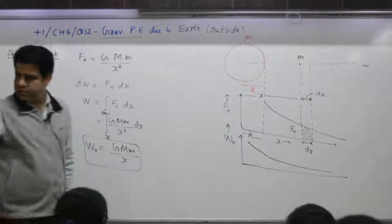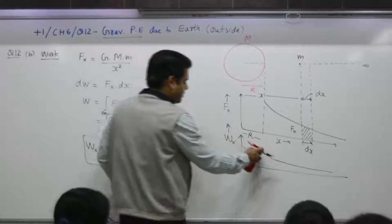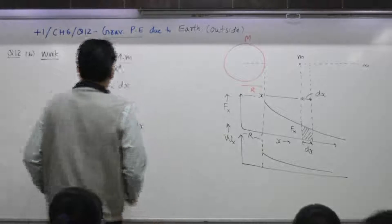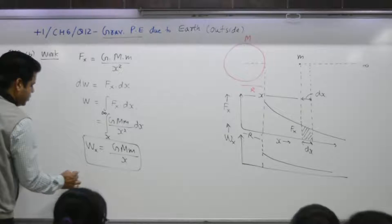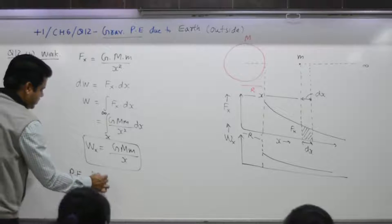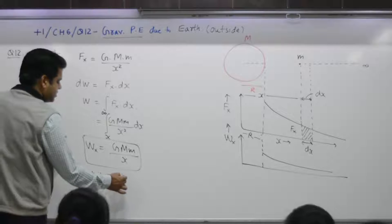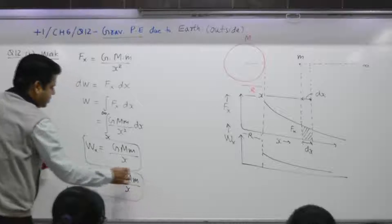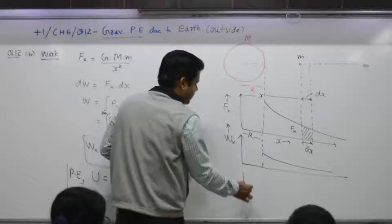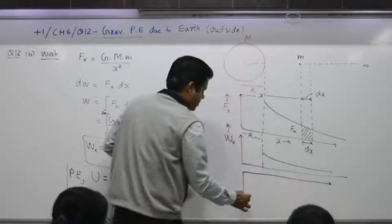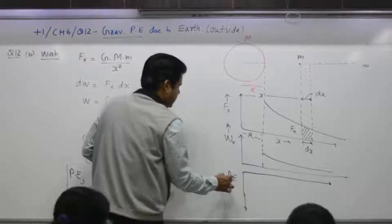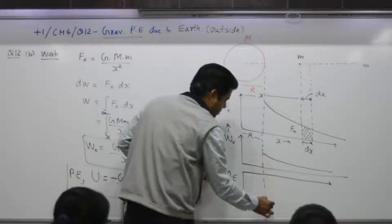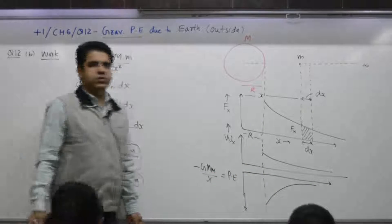The work done graph is inversely proportional to x, but it applies only outside the sphere. For potential energy, U equals minus GMm over x. The sign is negative — potential energy is minus GMm over x.